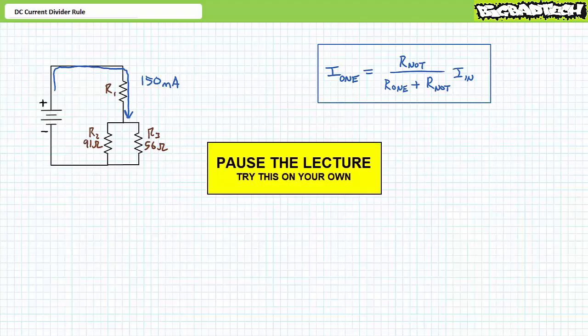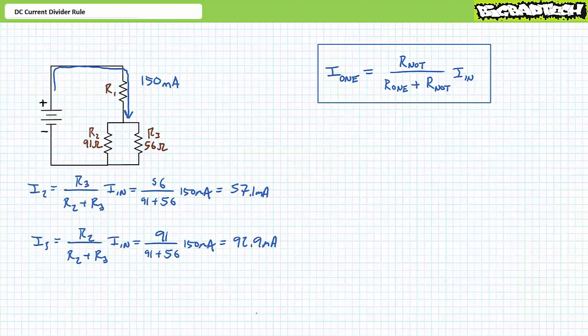If you're tracking, you should have obtained the following results. Presented without comment, you should find I2 to be 57.1 milliampers and I3 to be the remaining 92.9 milliampers. As a means of confirming our work, you'll note more current travels through the smaller resistor and less current travels through the larger resistor. And what comes in does indeed come out.